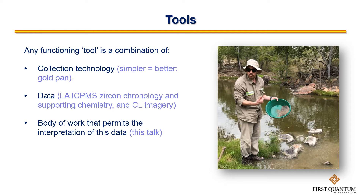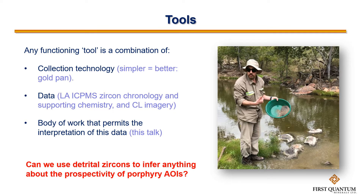As an explorer, it's important to me that we can take research capacity — such as laser ablation ICP-MS kit installed in universities around the world in the last 10 or 20 years — and turn it to practical utilisation. We need a collection technology: what material are we going to work on and how do we get it? There's nothing much easier than collecting heavy minerals in a gold pan. In this instance we're using laser ablation chronology and chemistry, supported by CL images of the zircon grains. We need a body of work that permits the interpretation of this data. What we really want to know from an exploration standpoint is: can we use detrital zircons to infer anything sensible about prospectivity of porphyry AOIs?